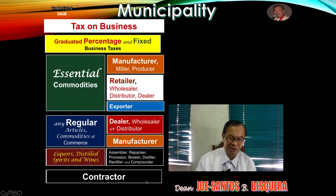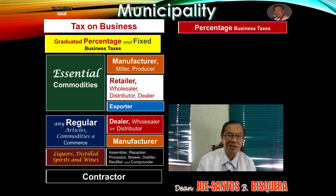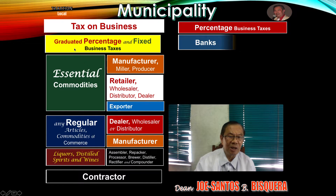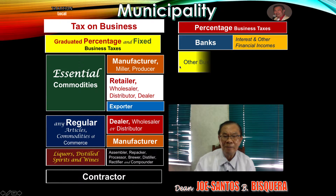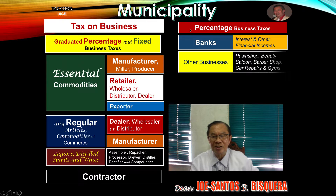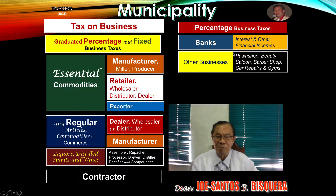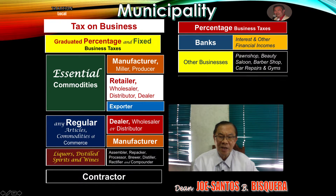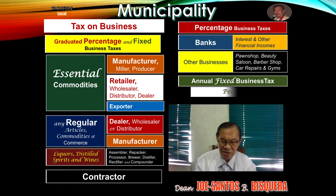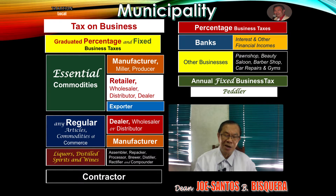The first two groupings deal with tangible commodities — manufacturing and selling — while the third one deals with rendering services. Moving to the categories of business tax: the first is the graduated percentage and fixed business tax; the second is the fixed percentage business tax, imposed on banks and other businesses performing services such as pawnshops, beauty salons, barbershops, car repairs, and gyms; and the third is the annual fixed business tax implemented on peddlers.